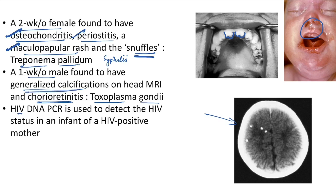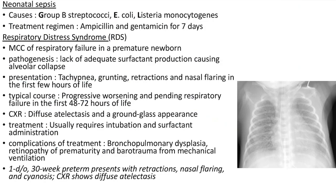HIV DNA PCR should be done to detect HIV status in an infant of an HIV-positive mother. Neonatal sepsis causes can be remembered by the mnemonic GEL: G for group B streptococci, E for E. coli, and L for Listeria monocytogenes. Treatment: ampicillin and gentamicin for seven days.